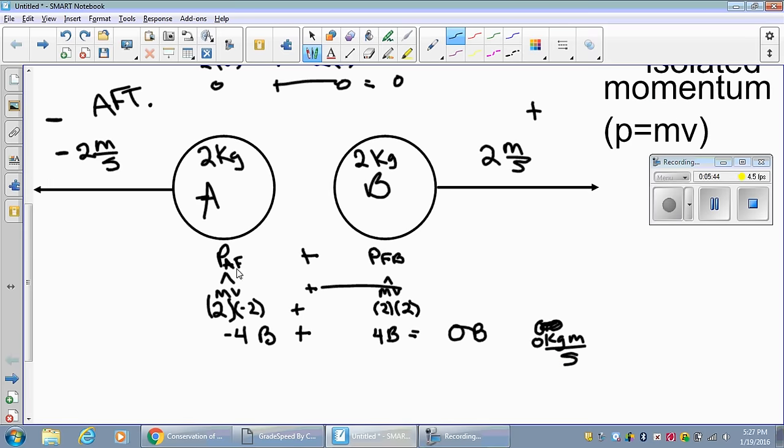Down here, my final momentum for A was negative. My final momentum for B was positive only because of the direction they were going. When they add up, they tend to be 0.